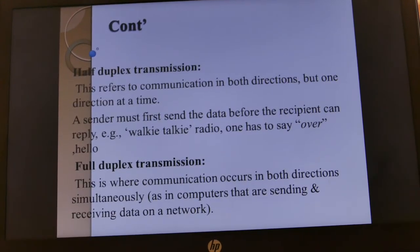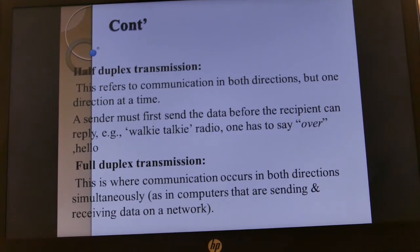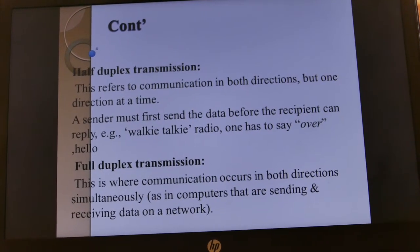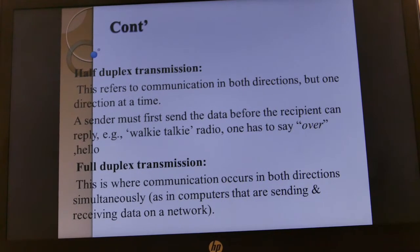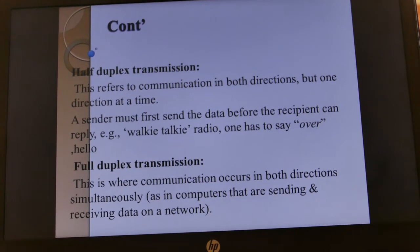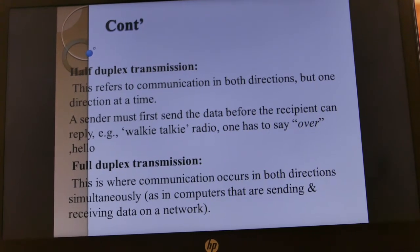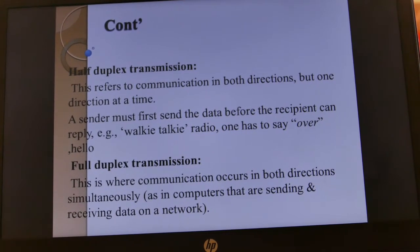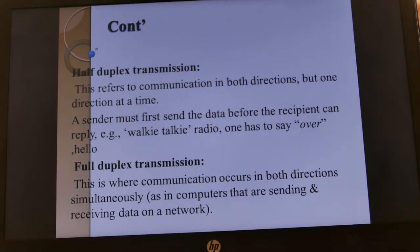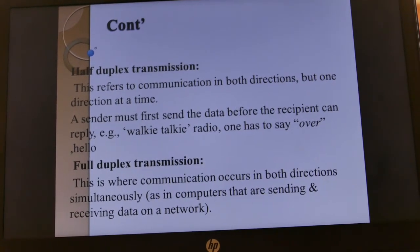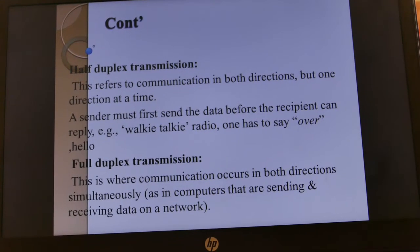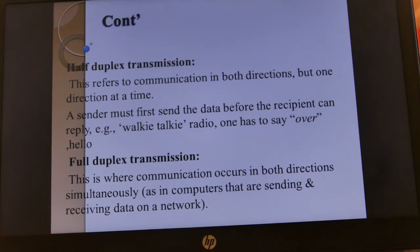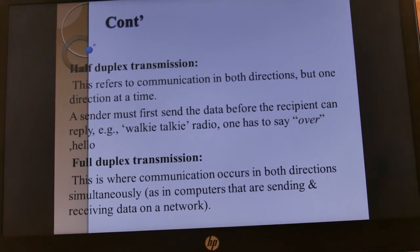Half duplex transmission refers to communication in both directions but one direction at a time, meaning the sender must send data before the recipient can reply. For example, the walkie-talkie used by the police — one police officer has to talk and say hello, while the other has to listen so that he can reply.